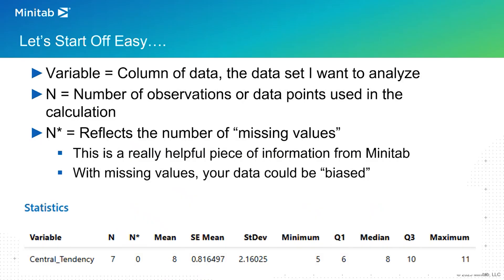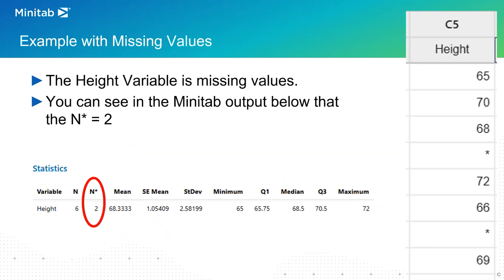N* in Minitab reflects the number of missing values. While N* may not be a universal term, the concept should be universal. When you collect your data, sometimes you're missing some data. Depending on how much data you're missing, you might judge your data set differently. For example, if I had an N of seven and an N* of seven — meaning I'm missing just as much data as I have — it really wouldn't put a lot of confidence behind my data set. Here's an example of a data set with missing data: the variable is height, and you can see two missing values marked with stars.